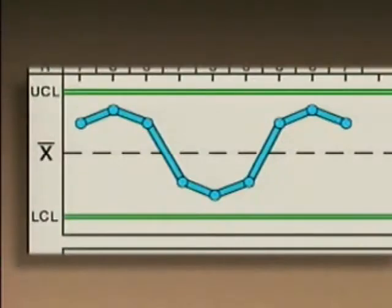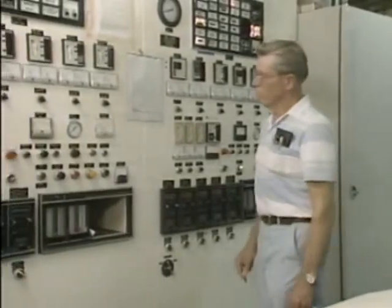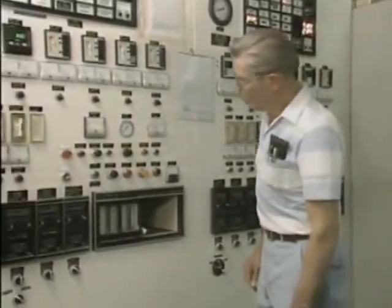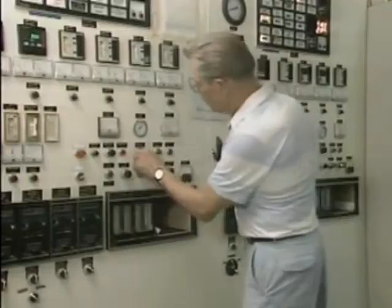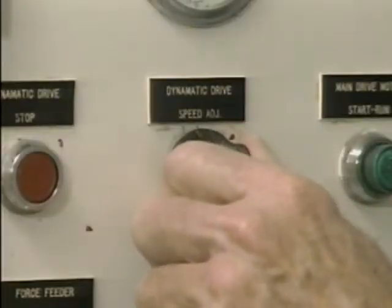A cycle is a pattern of instability that forms when data points fall above and below the process centerline in an alternating pattern. A cycle pattern could mean that the process is being adjusted too frequently — this is called over control — or that the amount of adjustment made is too great. Runs, jumps, trends, and cycles are some patterns of instability that can appear on SPC charts.